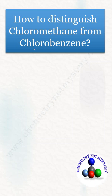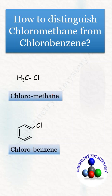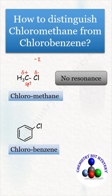How to distinguish chloromethane from chlorobenzene. In chloromethane, chlorine is bonded to an sp3 hybridized carbon. Due to the minus I effect, chlorine will develop a delta negative charge and carbon will develop a delta positive charge, and there is no resonance.